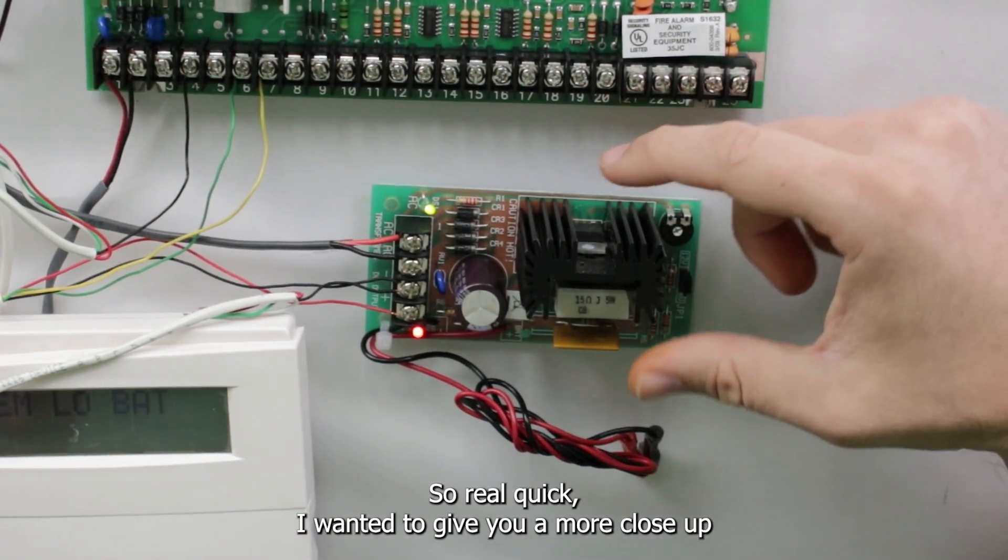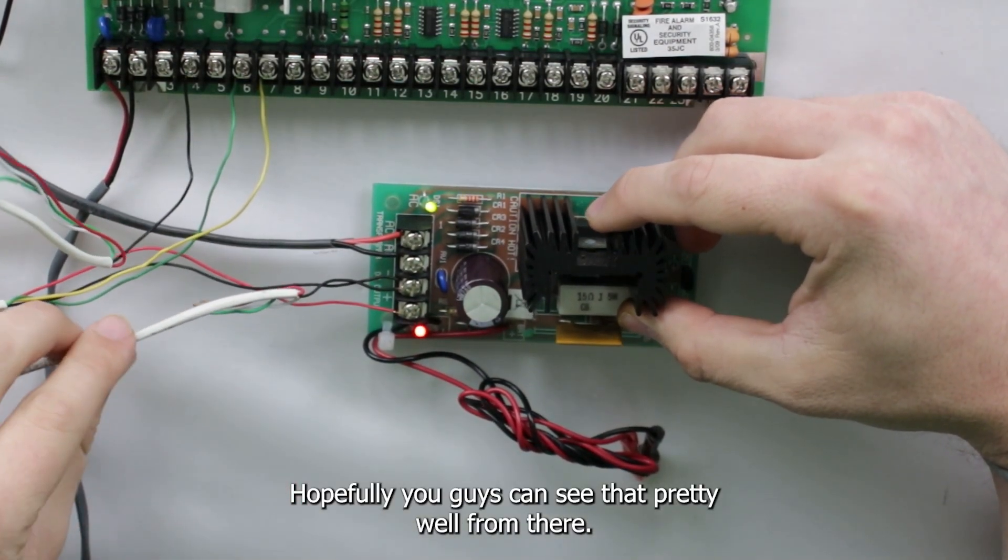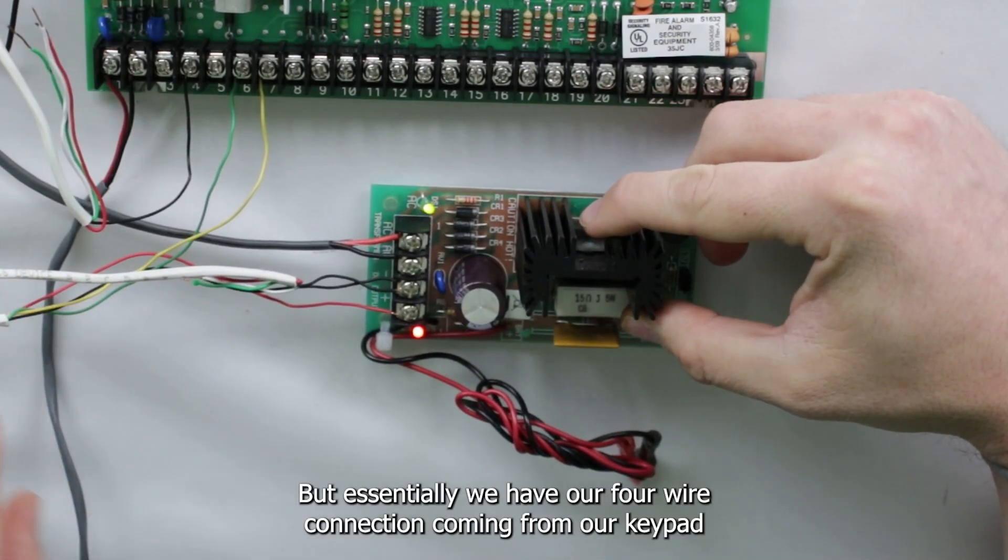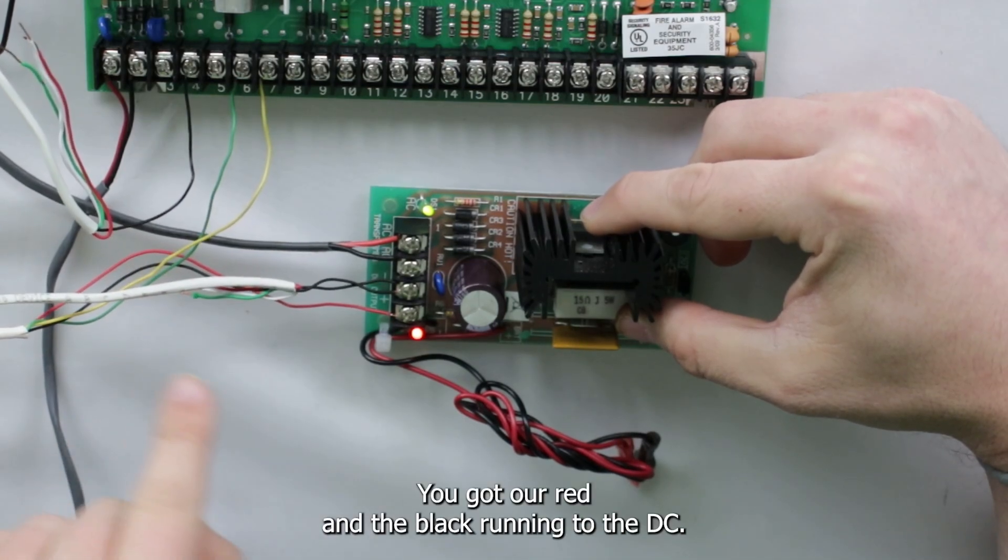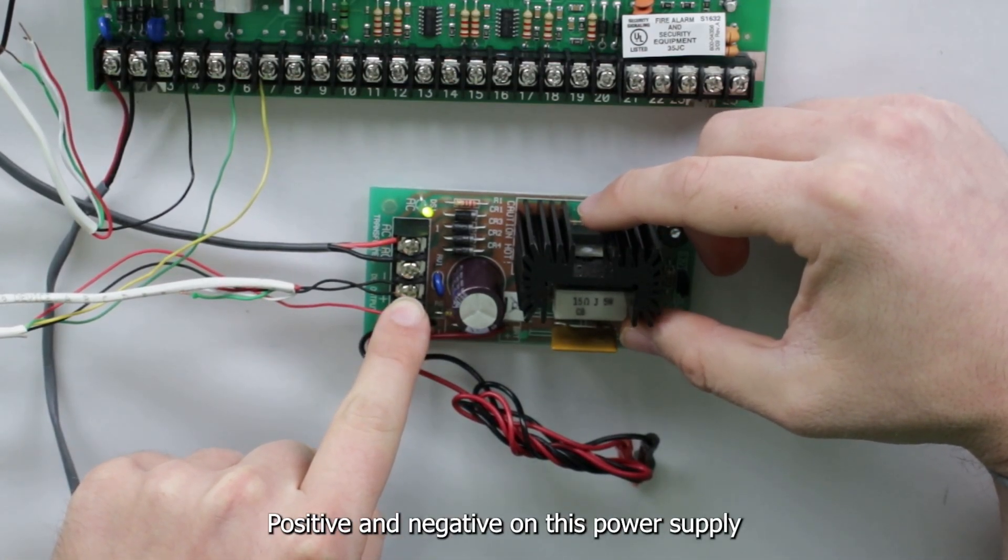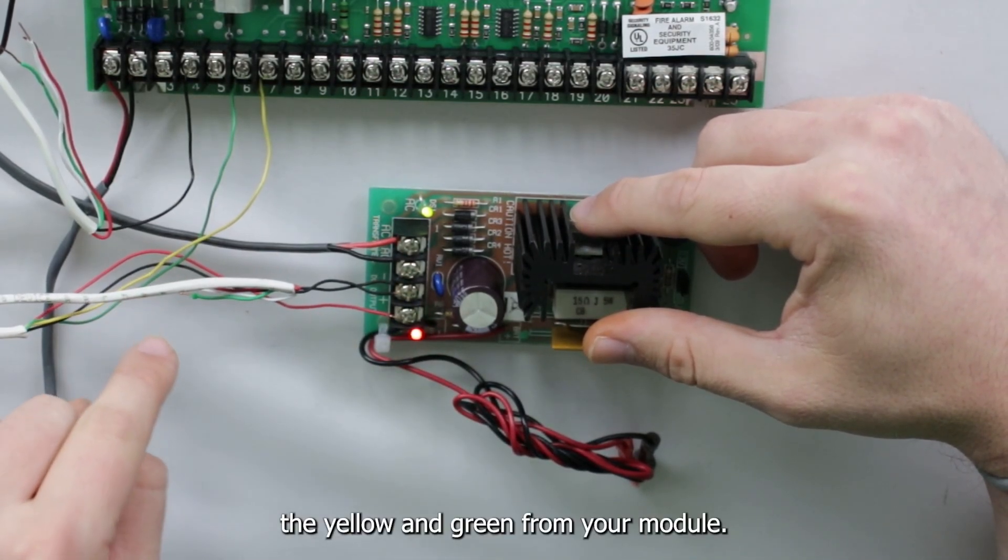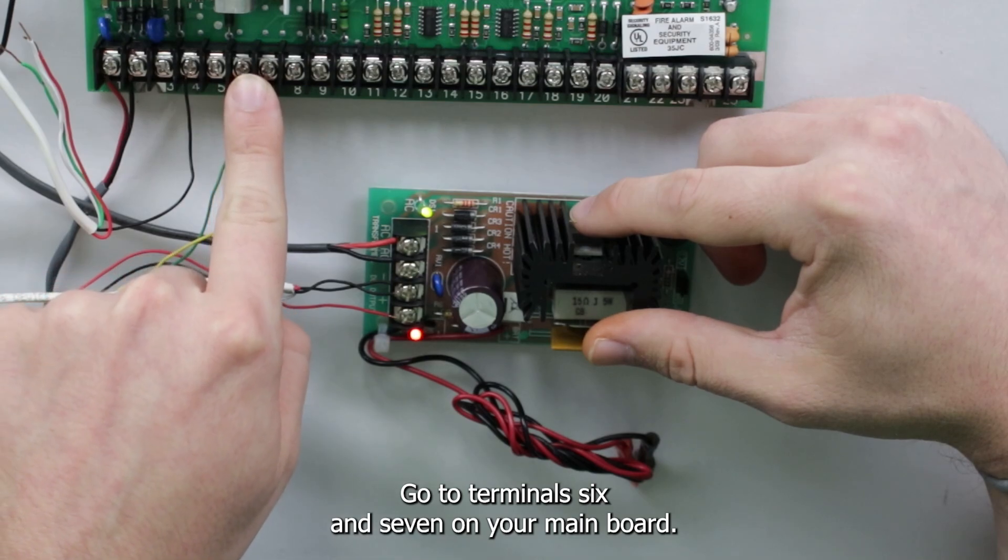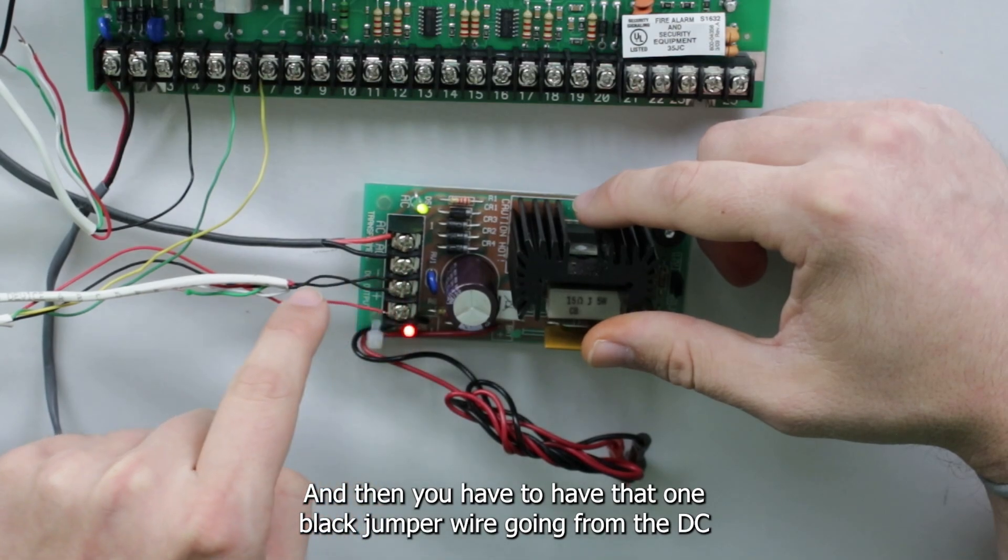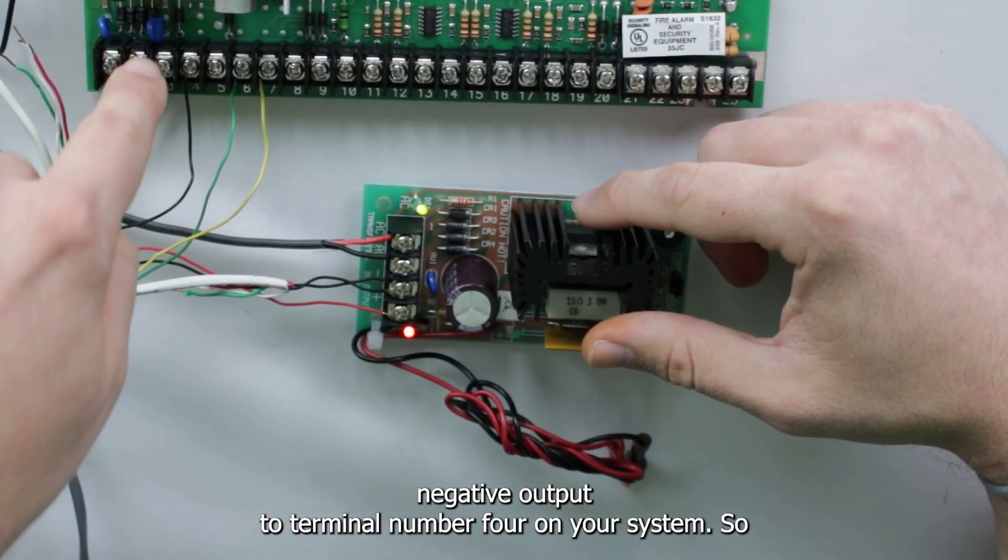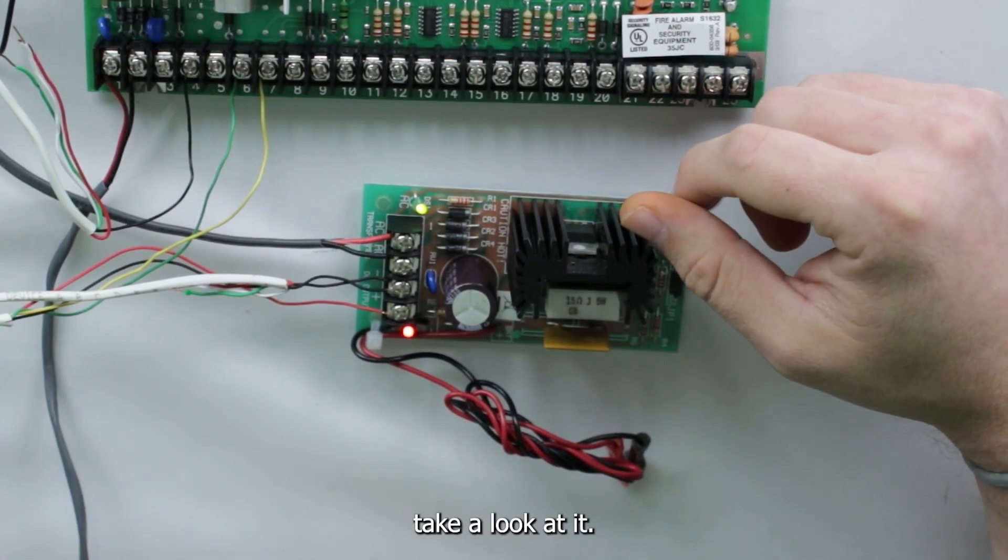So real quick, I wanted to give you a more close-up visual of what the wiring looks like. But essentially, we have our four-wire connection coming from our keypad right here. You got our red and the black running to the DC positive and negative on this power supply. The yellow and green from your module go to terminals six and seven on your main board. And then you have to have that one black jumper wire going from the DC negative output to terminal number four on your system.